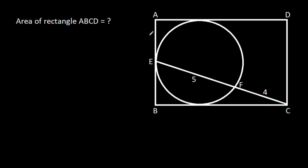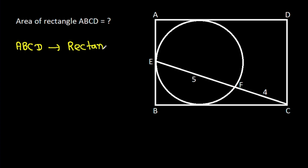In this video, we have been given that ABCD is a rectangle, EF is 5, and CF is 4. We have to find the area of ABCD. Since ABCD is a rectangle, these angles will be 90 degrees.